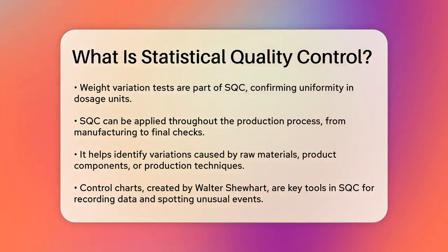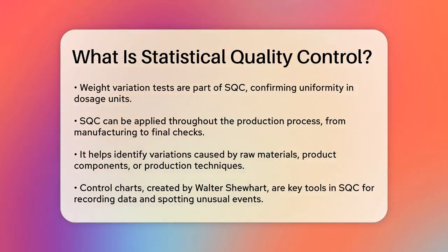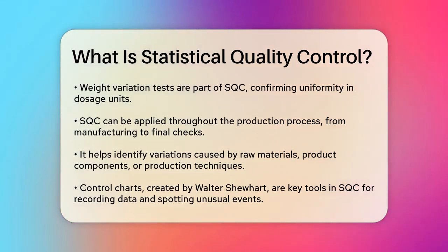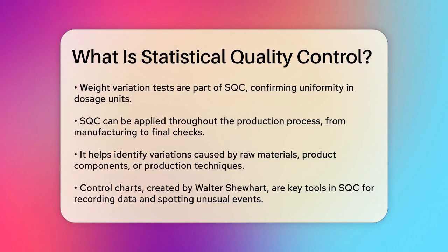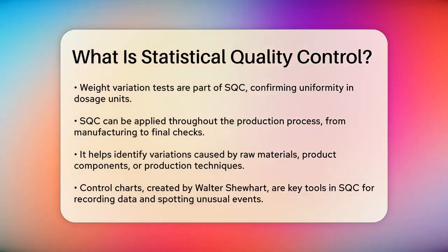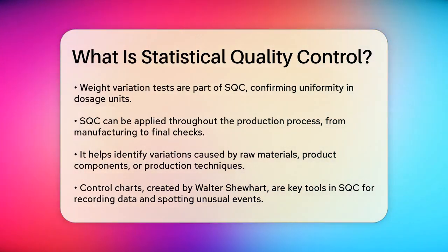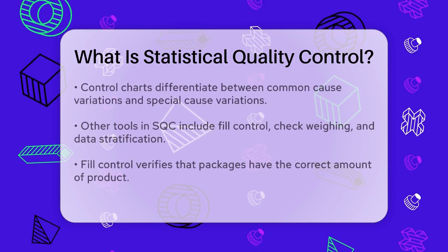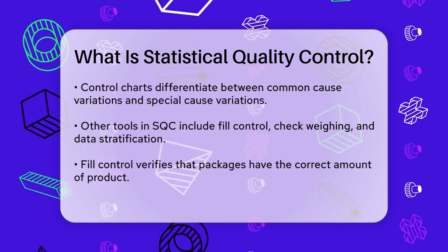SQC can be applied at various stages of production, from the initial manufacturing process to final quality checks. It helps identify any variations that might occur due to factors like raw materials, uniformity of product components, or the techniques used in the production process.